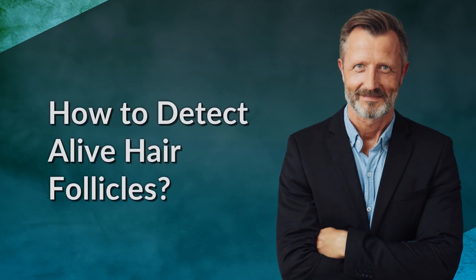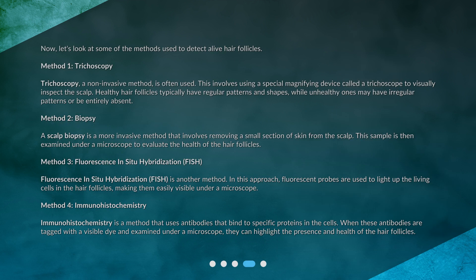Now let's look at some of the methods used to detect alive hair follicles. Method 1: Trichoscopy. Trichoscopy is a non-invasive method that involves using a special magnifying device called a trichoscope to visually inspect the scalp. Healthy hair follicles typically have regular patterns and shapes, while unhealthy ones may have irregular patterns or be entirely absent.